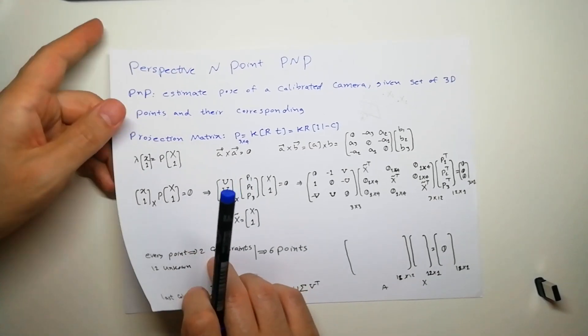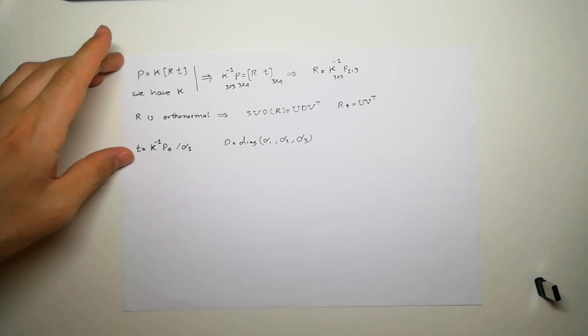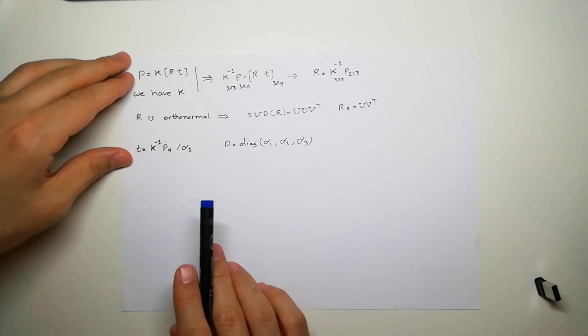Remember I said our camera is calibrated so we have the K, and we're looking for R and t.